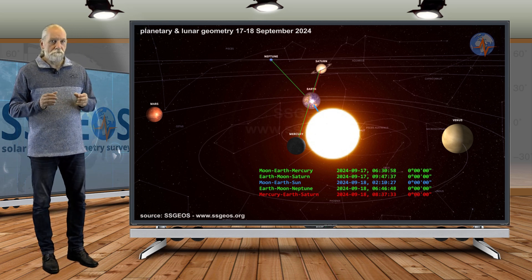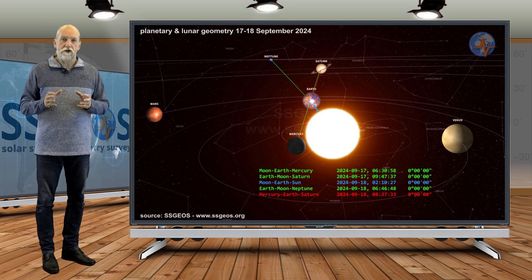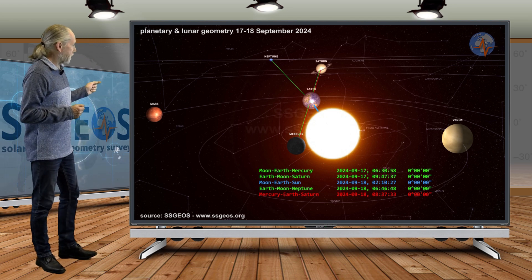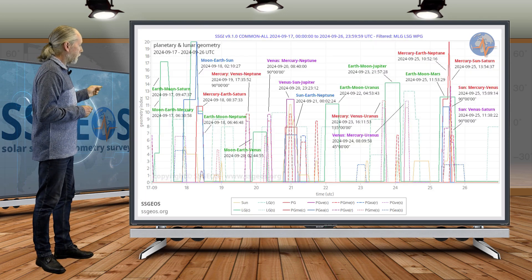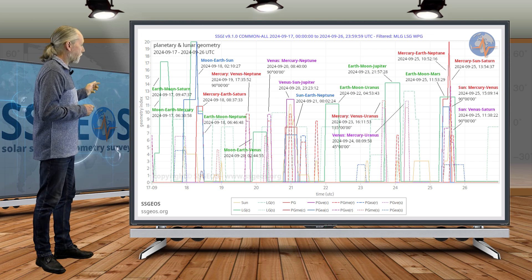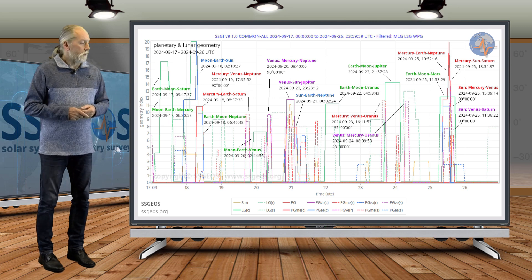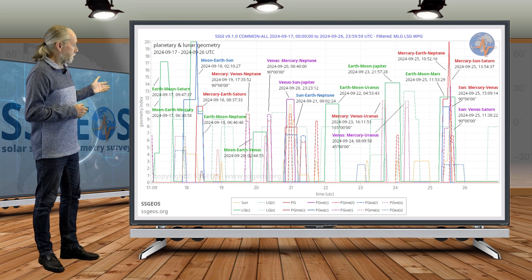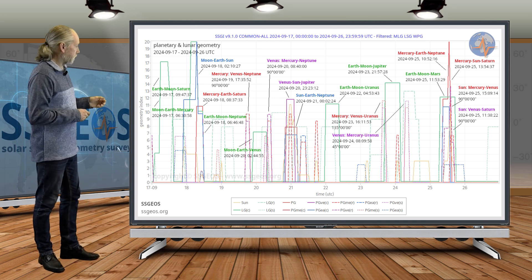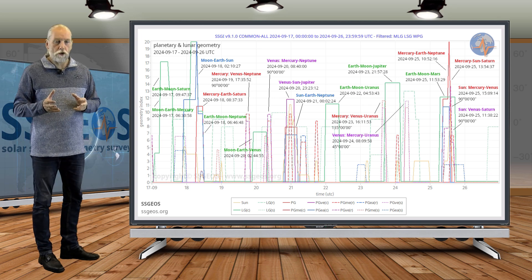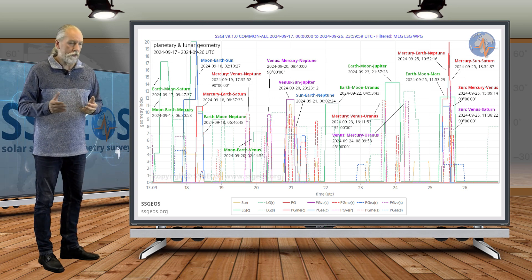I do suspect that there can be a stronger seismic event as a result, and if you go back to the SSGI graph, that could be around the 18th already, 18th or 19th. We could have a stronger seismic event as a response to that planetary lunar geometry. But I'm not too sure. Again, it's not all lining up perfectly.